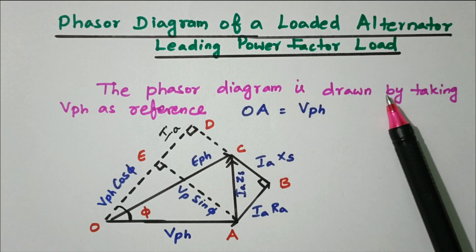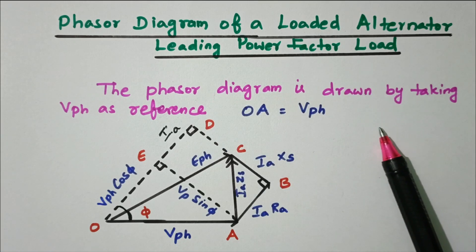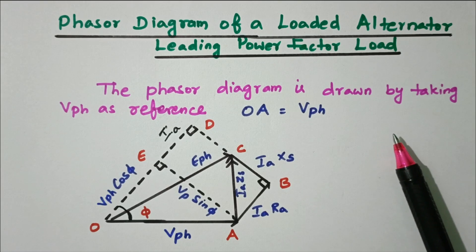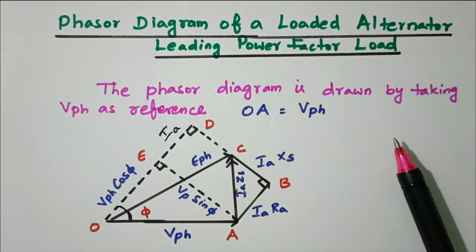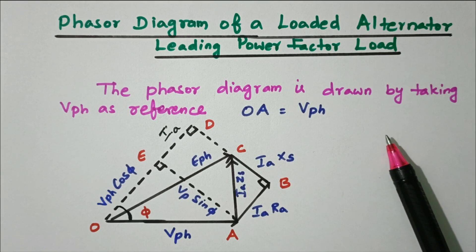Before going to the phasor diagram, we will see the equivalent circuit and voltage equation of an alternator, so that we are able to draw the phasor diagram. Now we will see the equivalent circuit of the alternator.